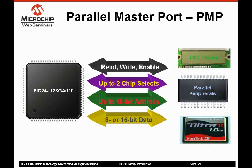Some features of the PMP are an address bus that can extend up to 16 bits, an 8-bit parallel data bus, and two address lines that can be configured as chip selects or address lines. The module also includes an address auto-increment and auto-decrement function for fast data transfer, and programmable address and data bus multiplexing.